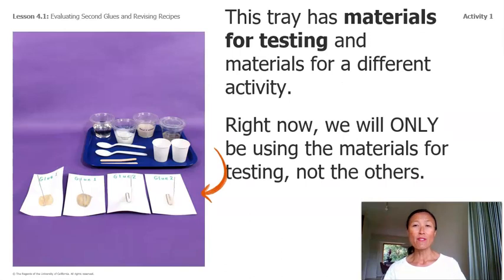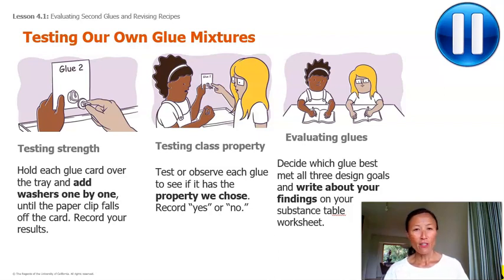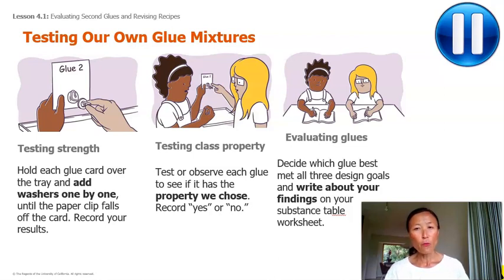This tray has materials for testing and materials for a different activity — right now we will only be using the materials for testing. Do you notice a big blue pause button? After I go over the instructions, go ahead and push pause so that you can conduct your test. Testing strength: hold each glue card over the tray and add washers one by one until the paper clip falls off the card, then record your results. Testing class property: test or observe each glue to see if it has the property we chose, then write yes or no. Evaluating glues: decide which glue best met all three design goals and write about your findings on your substance table worksheet. Now it's your turn — a good time to pause the video and do your test. Ready, set, pause.